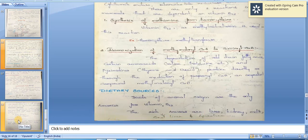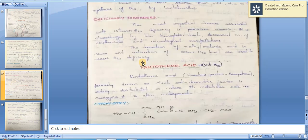Deficiency disorders: the most important associated with vitamin B12 is pernicious anemia. It is characterized by low hemoglobin levels, decreased number of erythrocytes, and neurological manifestations.